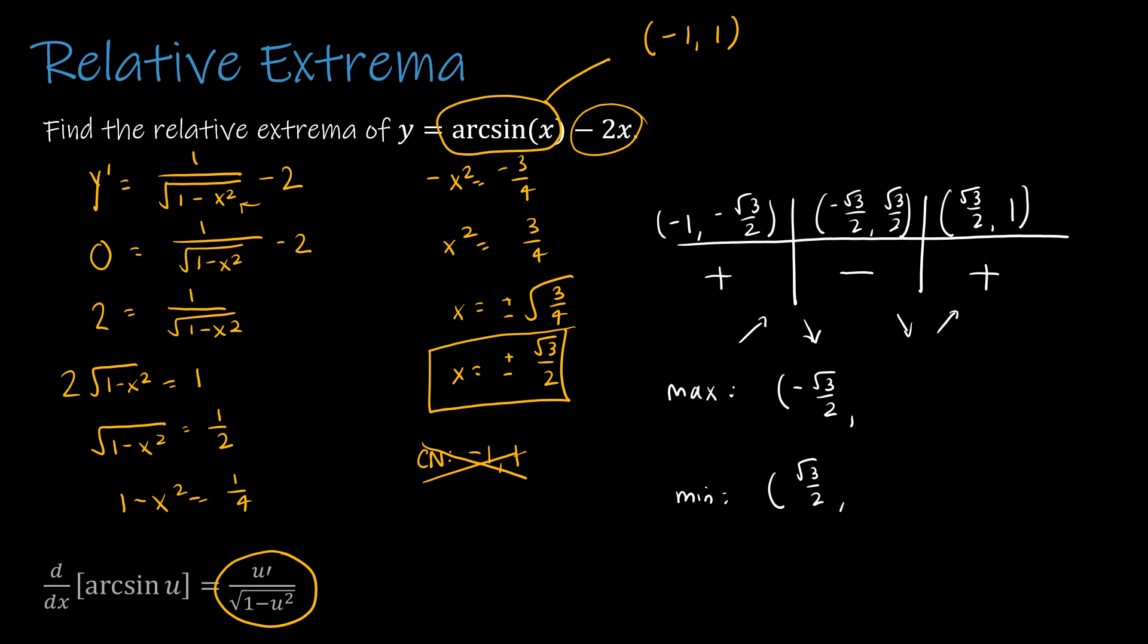And to find those y values, remember, I'm just going to take these values and plug them back into the original function. So in doing that, I get pi divided by 3 plus radical 3, and I get pi divided by 3 minus radical 3. Coming up next, the logical next step, of course, of finding the integral of an inverse trig function.